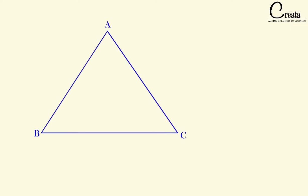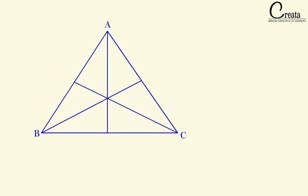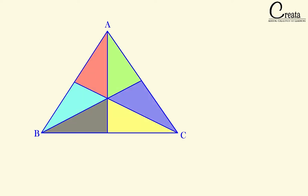Let's have a triangle ABC with its three medians. If you observe, the three medians have divided the big triangle into six small triangles. There is a property of the median: the area of all six triangles will be equal to each other. In this lecture, we will prove this property of the median through animation and visual tools.